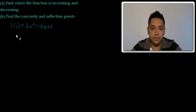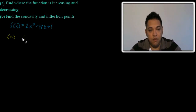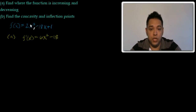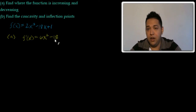For part a, we're going to take the derivative, which is f'(x) = 6x² − 18. I'm using the power rule: 3 times 2 is 6, then I decrease the power by 1, giving me x². The derivative of −18x is simply −18 — whenever you have a term like that, you bring the coefficient down as your derivative.